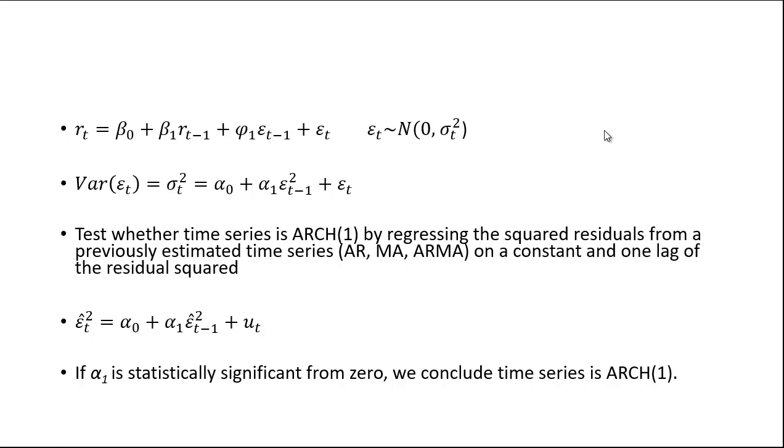What we're going to do is say that this variance of the error term follows this autoregressive model. That is, it's based on alpha naught plus alpha 1, a parameter, times epsilon or the error term squared one period lagged, plus the current period error term.